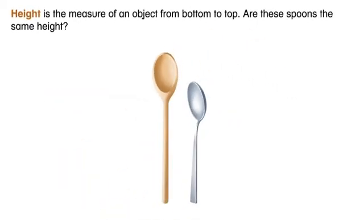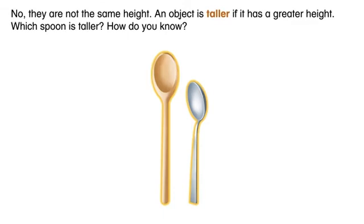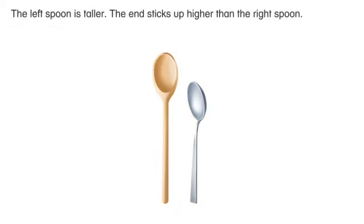Height is the measure of an object from bottom to top. Are these spoons the same height? No, they are not the same height. An object is taller if it has a greater height. Which spoon is taller? How do you know? The left spoon is taller. The end sticks up higher than the right spoon.